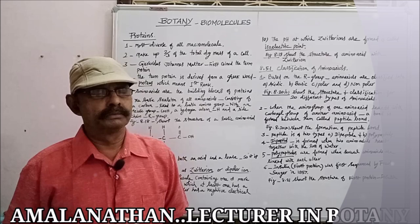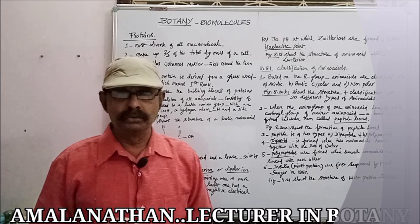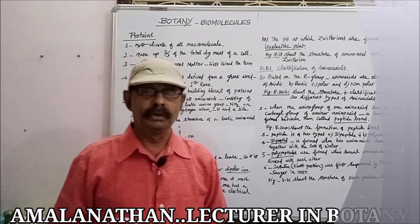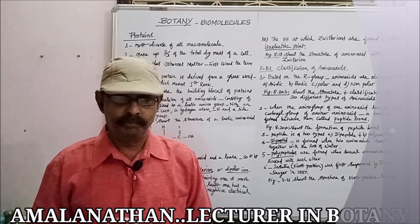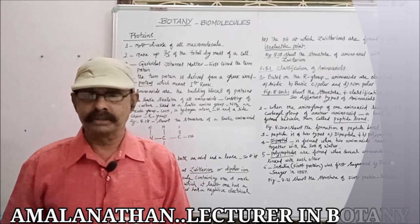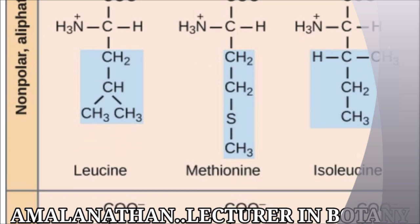Now we are going to see the classification of amino acids based on the R group. Amino acids are classified into acidic amino acids, basic amino acids, polar amino acids, and non-polar amino acids. This is also given in figure 8.20B, which shows the structure and classification of different types of amino acids.